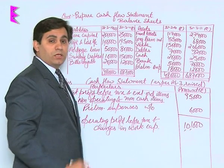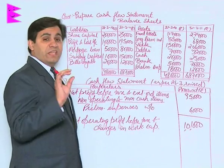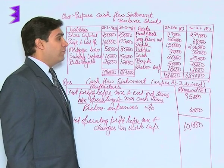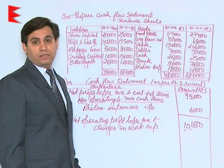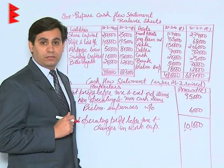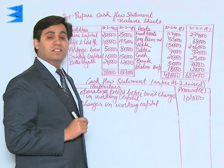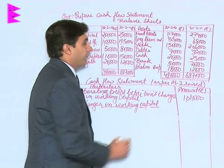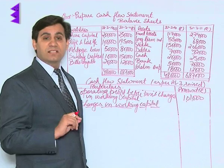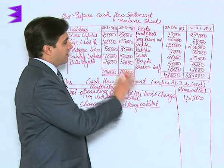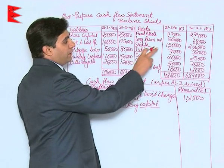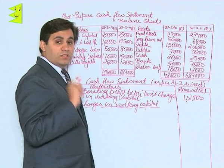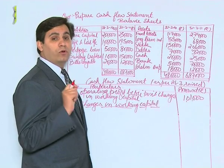To this amount we will effect changes based on the difference in working capital during the two-year period — that is, we will adjust the changes in the value of current assets and current liabilities. Working capital includes both current assets and current liabilities. We will start from the asset side first. Stock is a current asset and its value has increased by ₹56,000 over the one-year period.